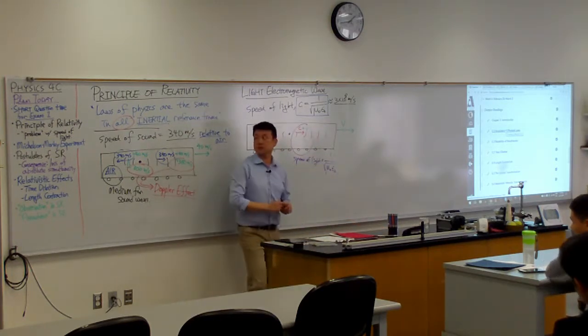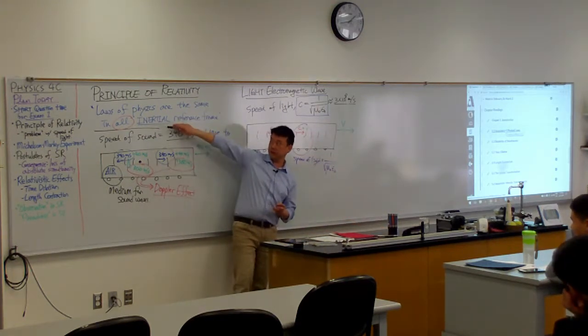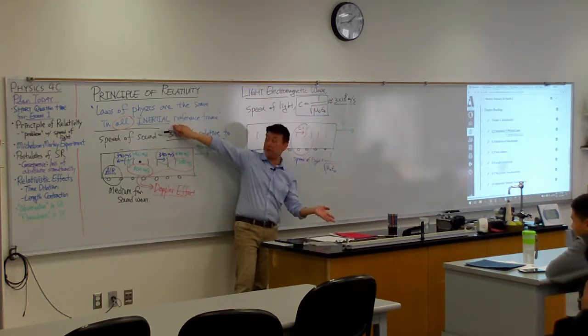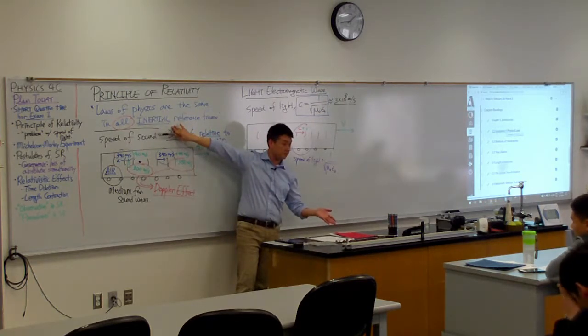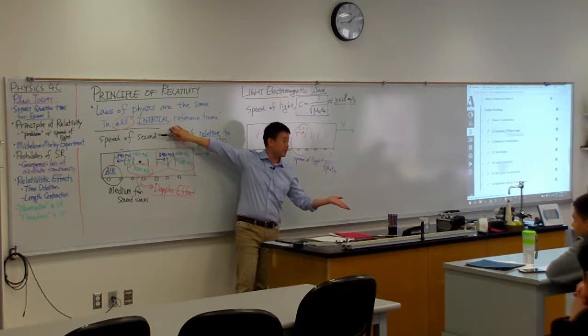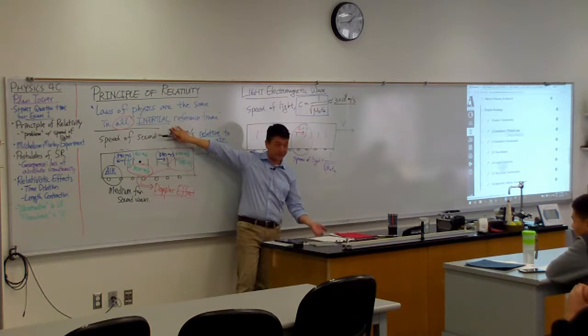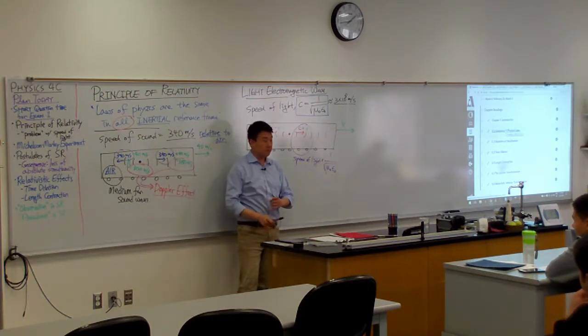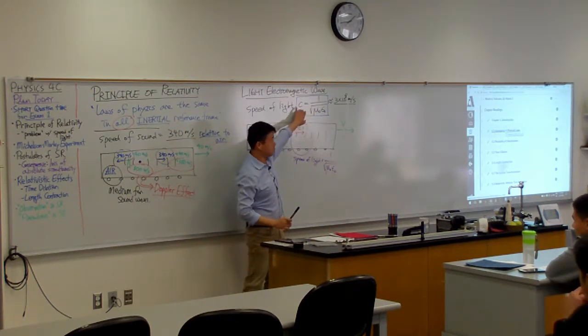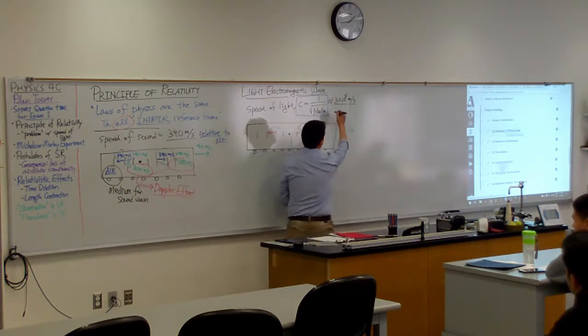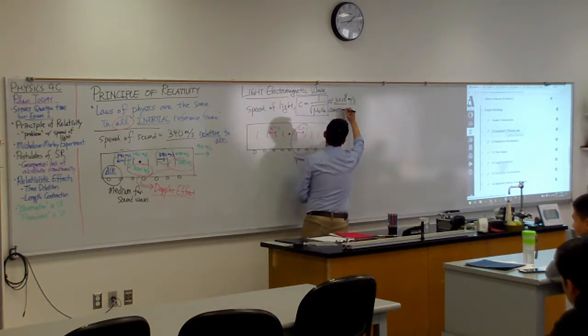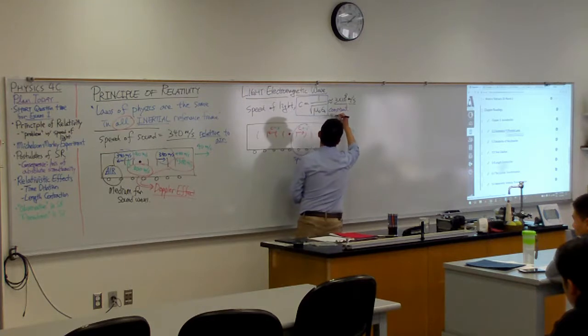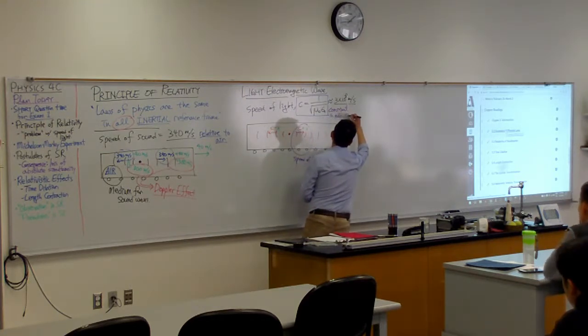That because of principle of relativity, laws of physics are the same in all inertial reference frames. And the laws of electrodynamics are also laws of physics. And laws of electrodynamics are the same in all inertial reference frames. That means one of its consequence, the speed of light, is constant in all inertial reference frames.